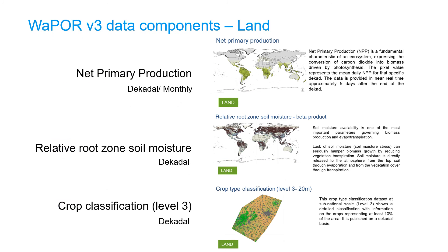For the land components, WAPOR version 3 provides decadal and monthly net primary production data and relative root zone soil moisture data, available only at decadal time steps. For selected level 3 areas, WAPOR will also provide decadal maps of crop classification. Global land cover classification is available in the hand-in-hand portal, including both the Copernicus land cover classification of 2015, as well as the 2020 and 2021 ASAP world cover maps available under the hand-in-hand tab in the portal.